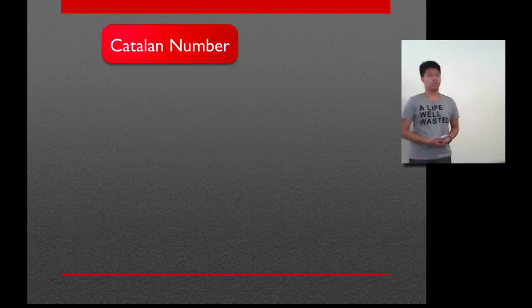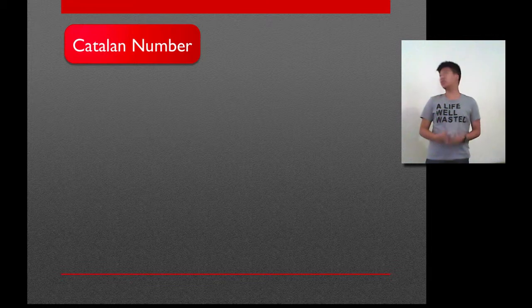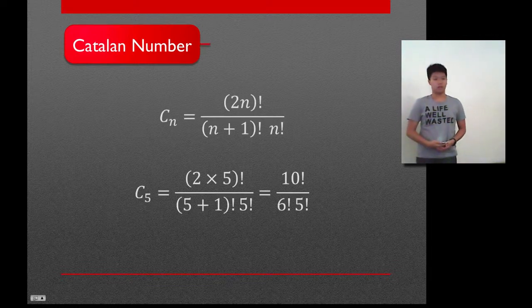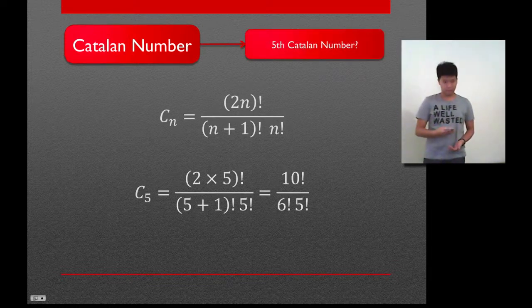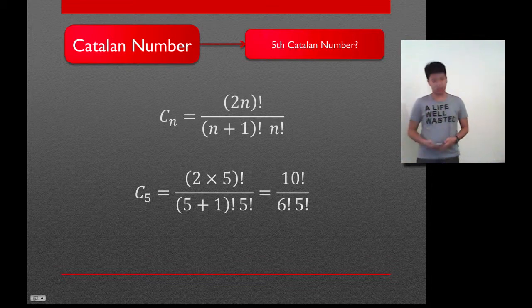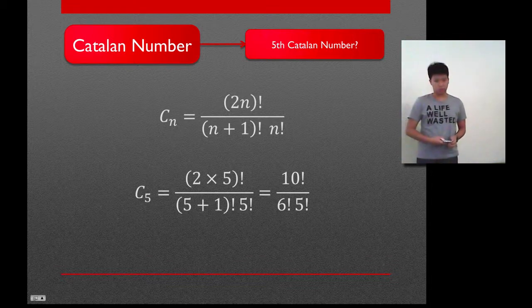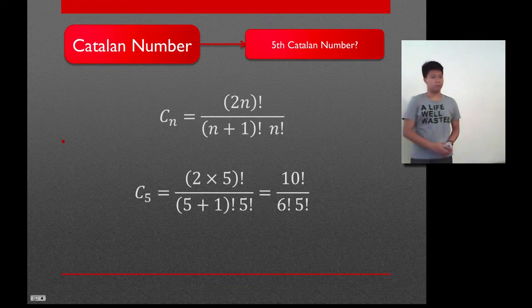So, let's try that equation, shall we? How about we try the 5th Catalan number to equate it? Let's bring the equation back, and we change all the n's into 5. Calculating it will result in the 5th Catalan number, which is 42. That's my short explanation about the Catalan numbers.